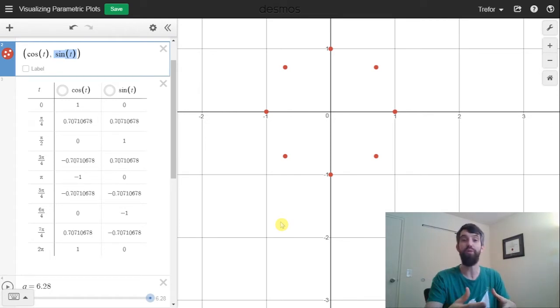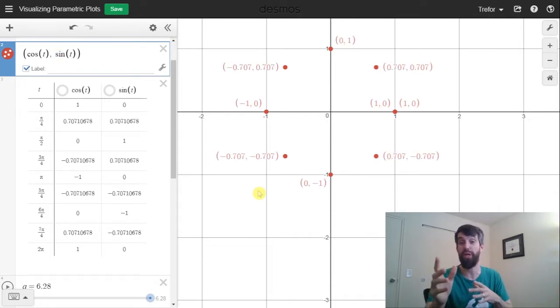And then I've plotted what do all the points cos of t, sine of t look like. Indeed, they sort of look like they're going around in a circle and I can come over here and click this little label button and it can tell me exactly what the coordinates of each of those are going to be.